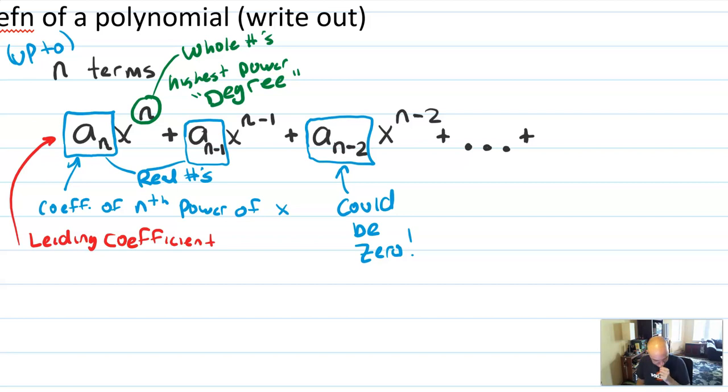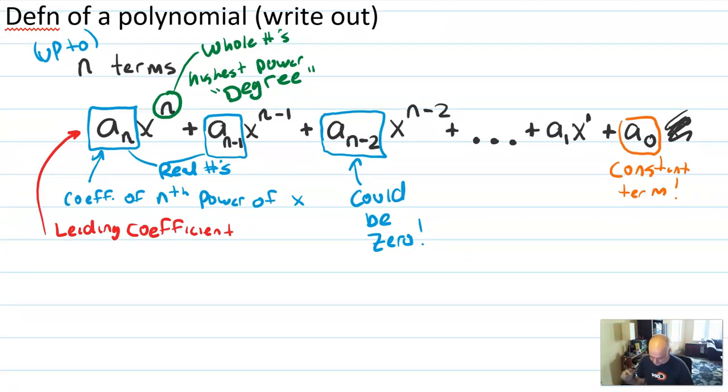So I'm going to say, let's see, the second to last term would be a sub 1 x to the 1. And then I need an a sub 0 x to the 0, which we don't usually write. And that last term has a special name, too. That's called the constant term, which is usually just a number. So that's our mathematical definition of a polynomial.